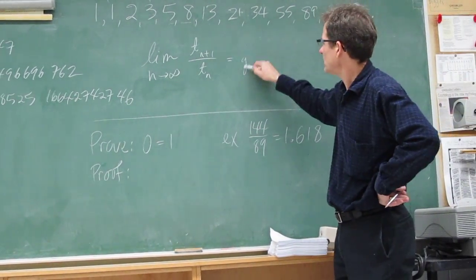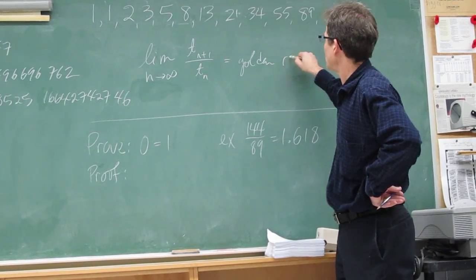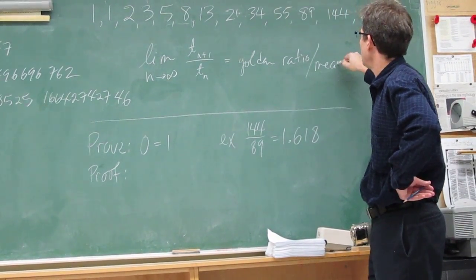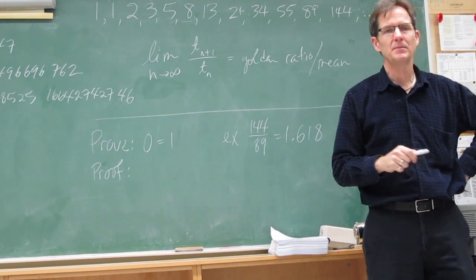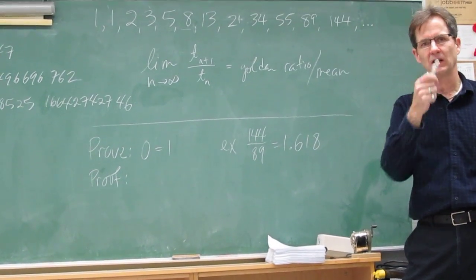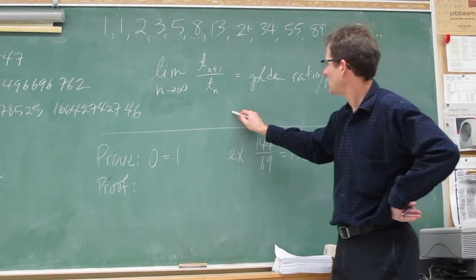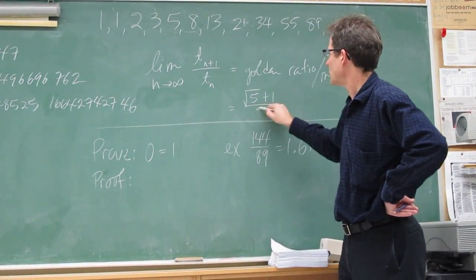So this number is that golden ratio or the golden mean that Alana was talking about. It comes up in nature and it comes up in art. That's where Alana has seen it. And it's equal to, if I'm not mistaken, root five plus one over two.